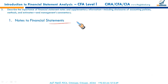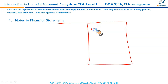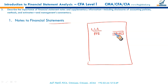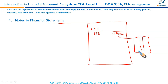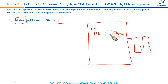Notes to financial statements are an integral part of the financial statements — without them, the financial statements are not complete. Notes are audited just like the balance sheet, income statement, and statement of changes in equity. For example, if a balance sheet shows a single line item for property, plant and equipment of $100 million, the notes provide the breakup, composition, accumulated depreciation charge, and net book value of component assets within that amount.